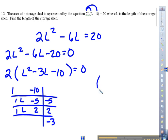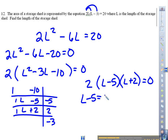My two factors are L minus 5 times the quantity L plus 2 equals 0. Of course, that 2 is out there, but 2 can never be 0. So this quantity of L minus 5, that's got to be 0, or L plus 2 has to be 0. And if you solve for L, you get L equals 5, or L equals negative 2.